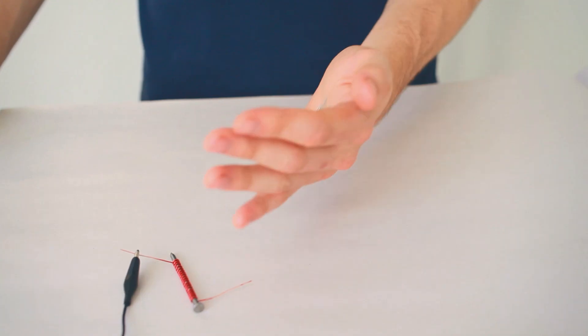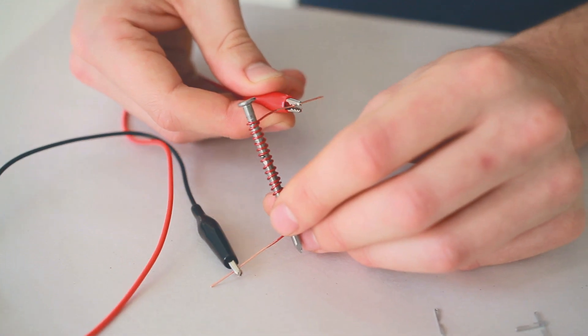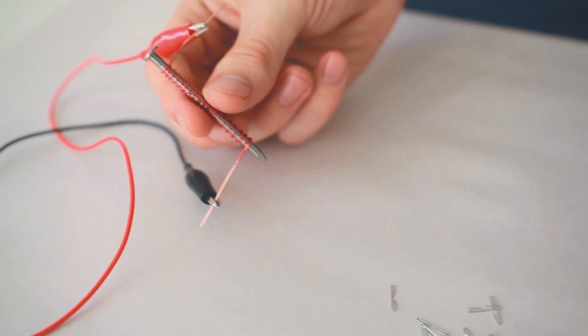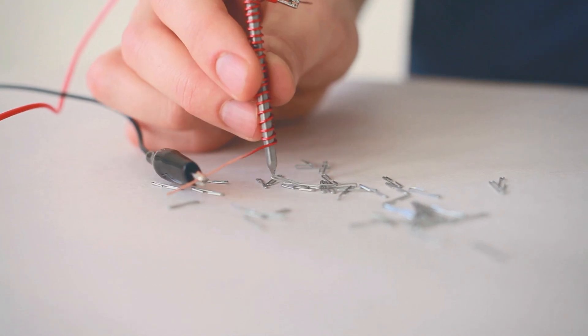Now we're ready to test our electromagnet. So first you need to take your staples, spread them out. To hook up your electromagnet, just attach the other alligator clip. Then bring the tip down close to the staples. Voila, an electromagnet.